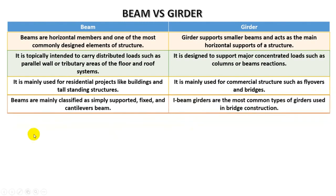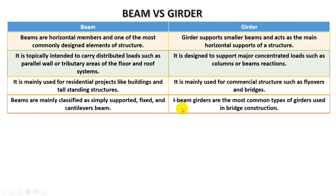Beams are mainly classified as simply supported, fixed, and cantilever beams. Girders can be classified as I-beam girders, which are the most common type used in bridge construction. Almost every engineer prefers the I-girder, and it is the most commonly used girder in structures.